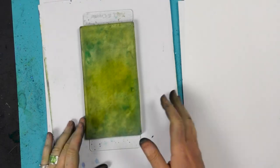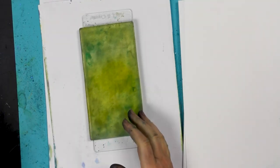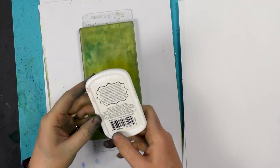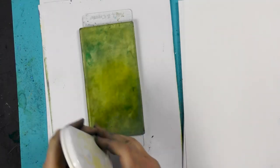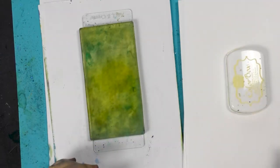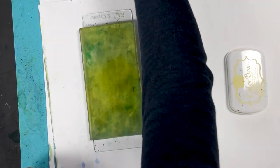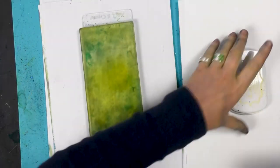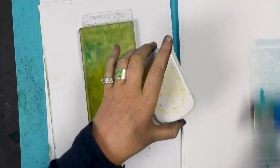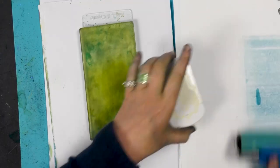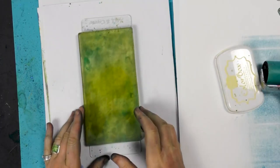We're going to be using the Gel Press again and this time we're going to be using Colour Box, this is Lemonade. So I've got my brayer here and I'm just going to transfer this ink over onto the Gel Press.